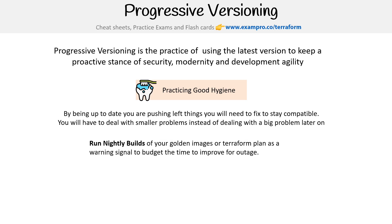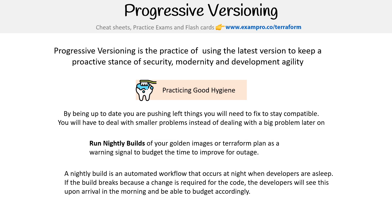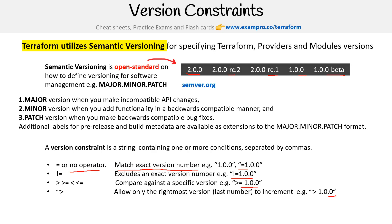Running nightly builds is a good example, especially where you might have golden images. A nightly build is an automated workflow that occurs at night when developers are asleep, so if the build breaks because a change is required for the code, developers will see this upon arrival in the morning and be able to budget accordingly. When putting in your providers — especially if you copy from the Terraform website — they'll have it set to equals. What I'm saying is you want to use something like a tilde or a greater-than-or-equal sign so that you are staying progressive.